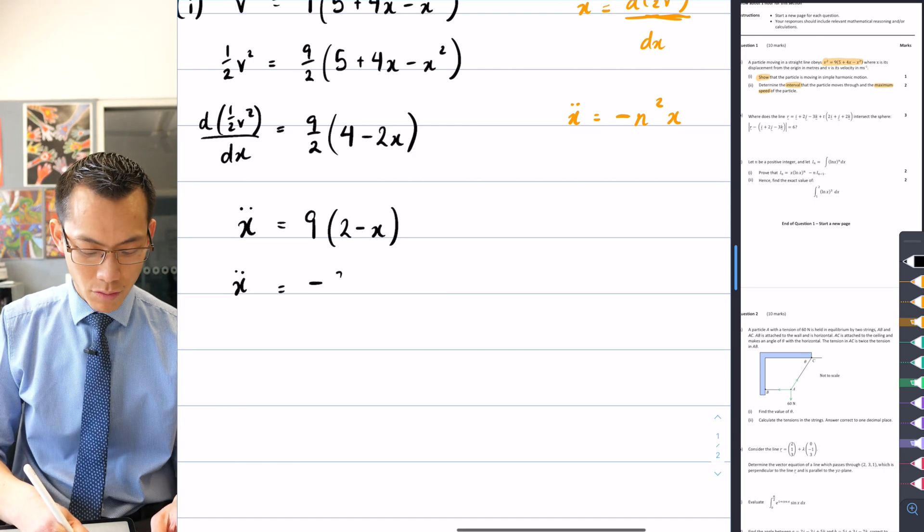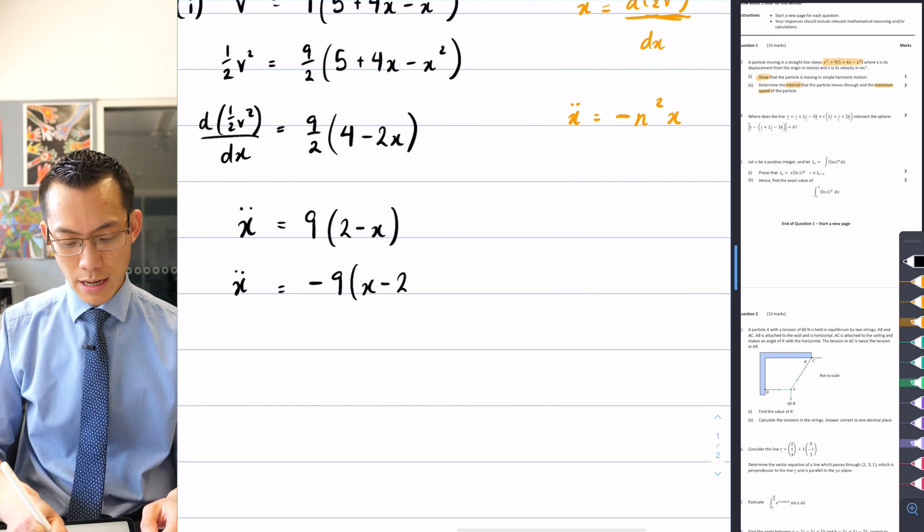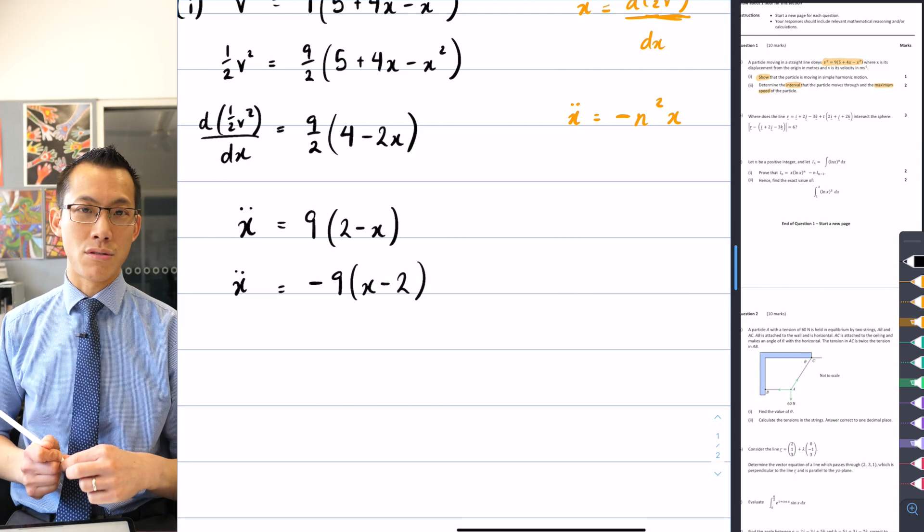That's my n². I'll just write that as 9. And then having taken a minus sign out, a factor of -1, I should say, I can write that as x - 2. And we're done.